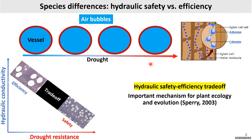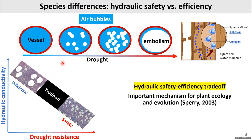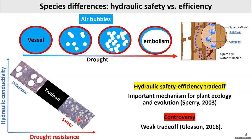One hypothesis helping us understand species differences regarding hydraulics and drought is the safety-efficiency trade-off, thought to be an important mechanism for plant ecology and evolution. Larger vessels conduct more water but are also more prone to air bubbles — cavitation. When drought becomes too intense, the conduit becomes embolized and the hydraulic system fails. Species should trade off along a spectrum between larger vessels, which conduct more water, and smaller vessels, which conduct less but are safer. However, Gleason (2016) found this trade-off is weak, with very low correlation.